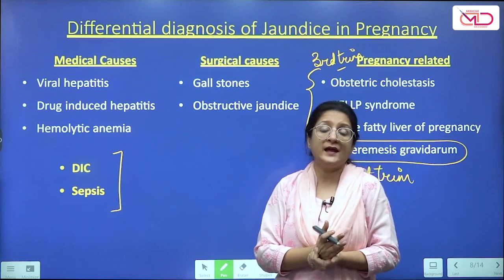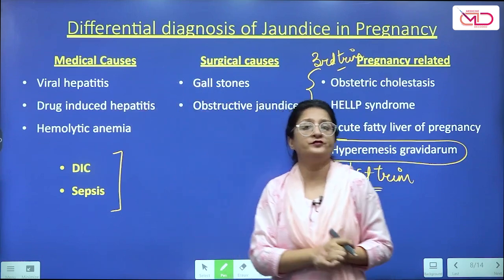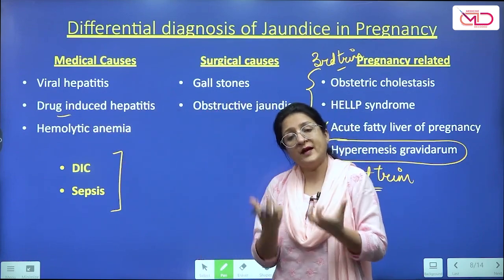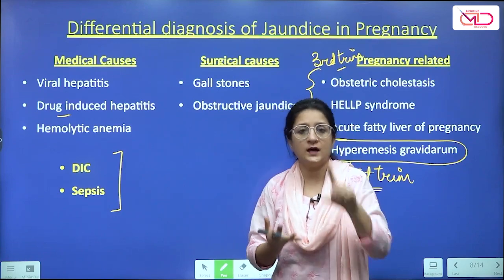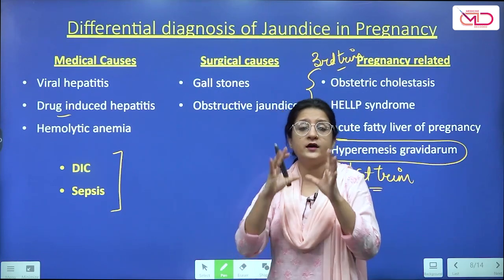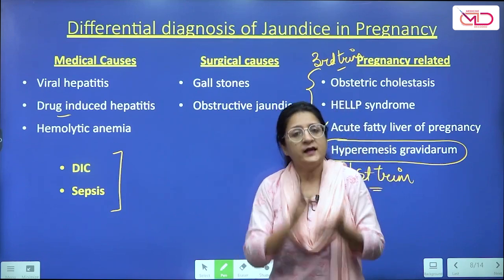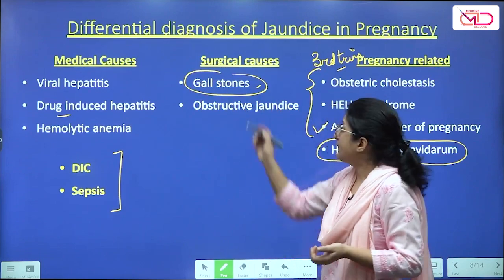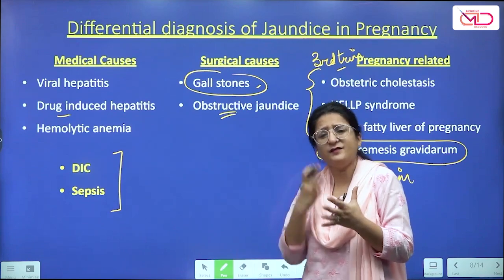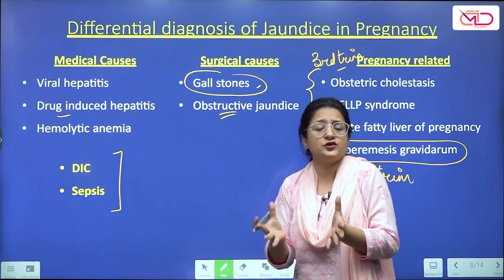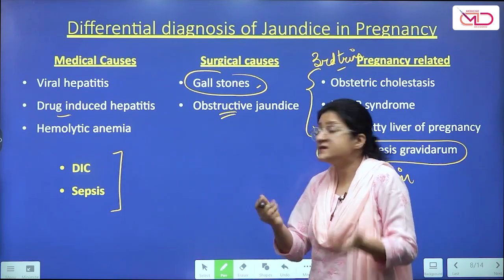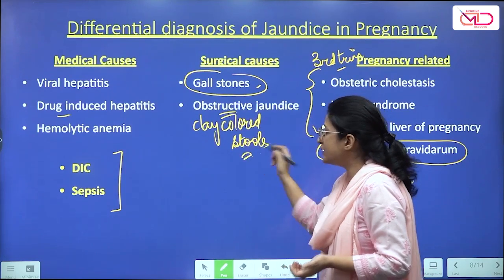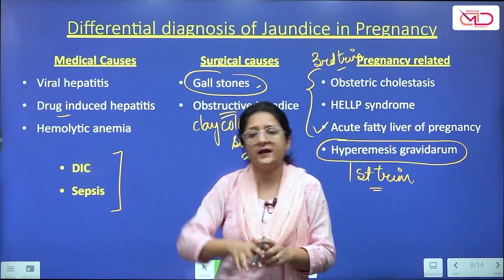When taking history, note if she is a known case of any medical disorder, take the drug history, and assess the complete symptom profile: Did she have nausea, vomiting, or gastrointestinal symptoms? Did she have fever? Note history of right upper quadrant pain. Ask about a known history of gallstones. In cases of obstructive jaundice, ask about clay-colored stools — that would go in favor of obstructive jaundice.